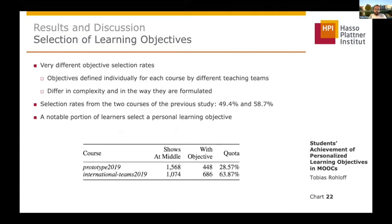Let's investigate the second research question. In this table you can see the objective selection rates, which are very different across the courses. In the first course it was around 28 percent and in the second around 63 percent. We think this is caused by the fact that the objectives were defined individually for each course by different teaching teams, so they differ in complexity and in how they are formulated. Overall we think this is still a notable portion of learners who selected a learning objective, and the general acceptance of the feature is quite good.